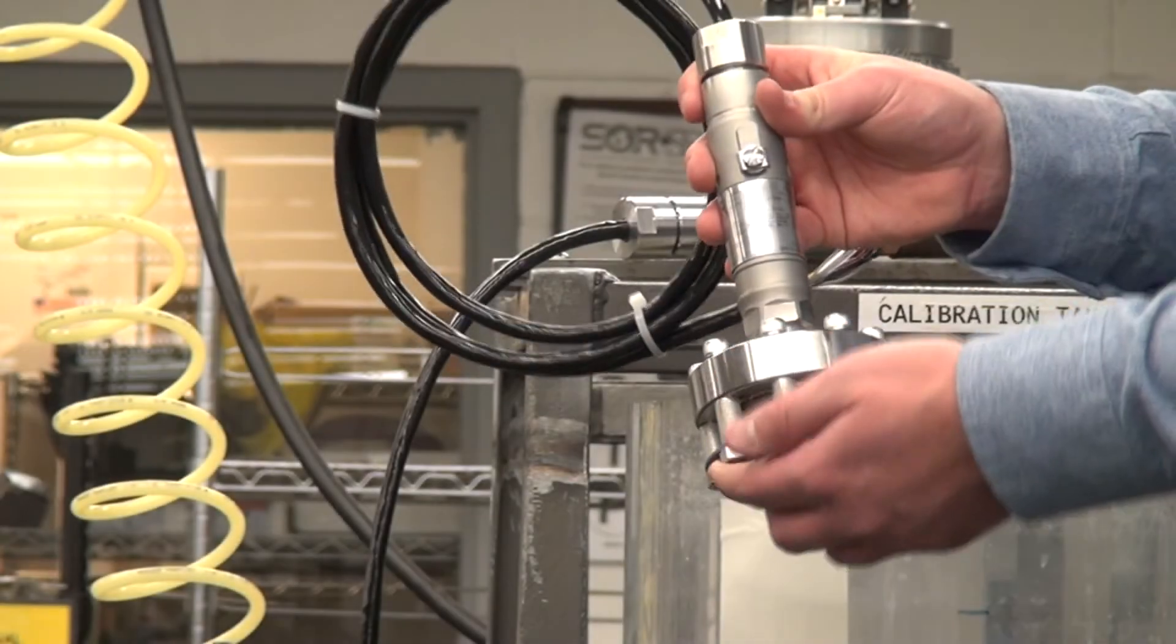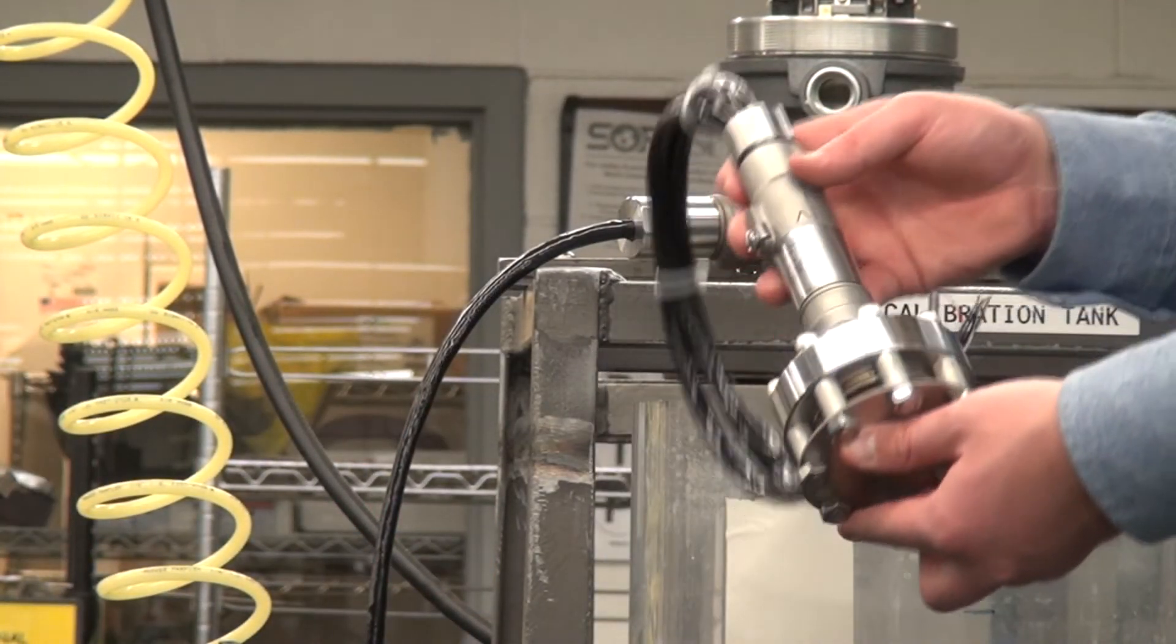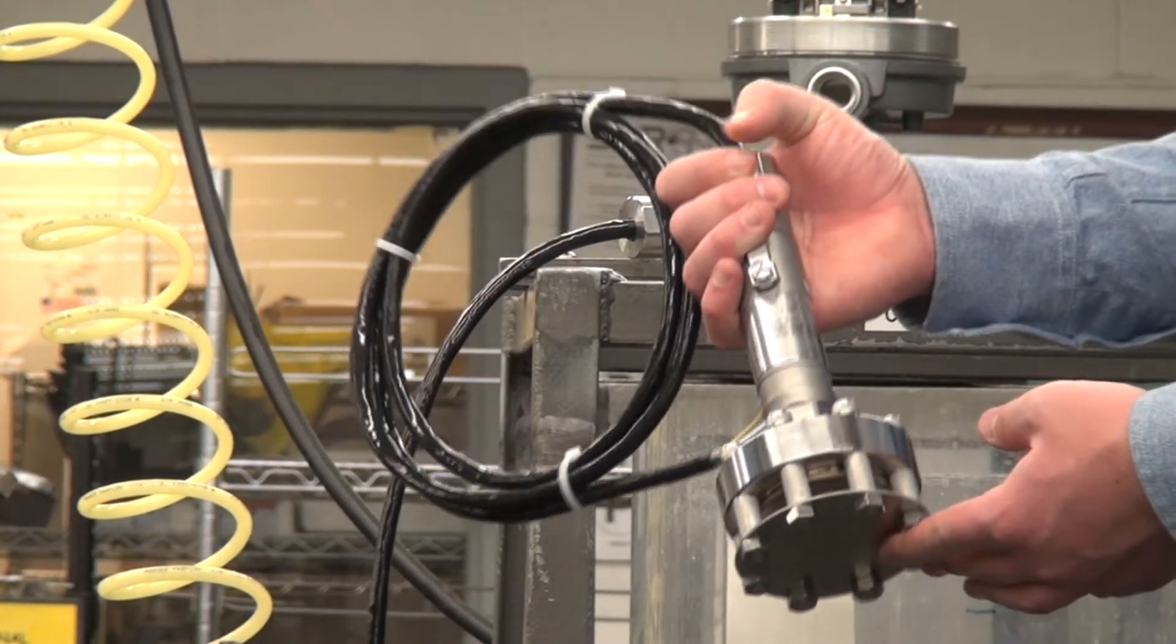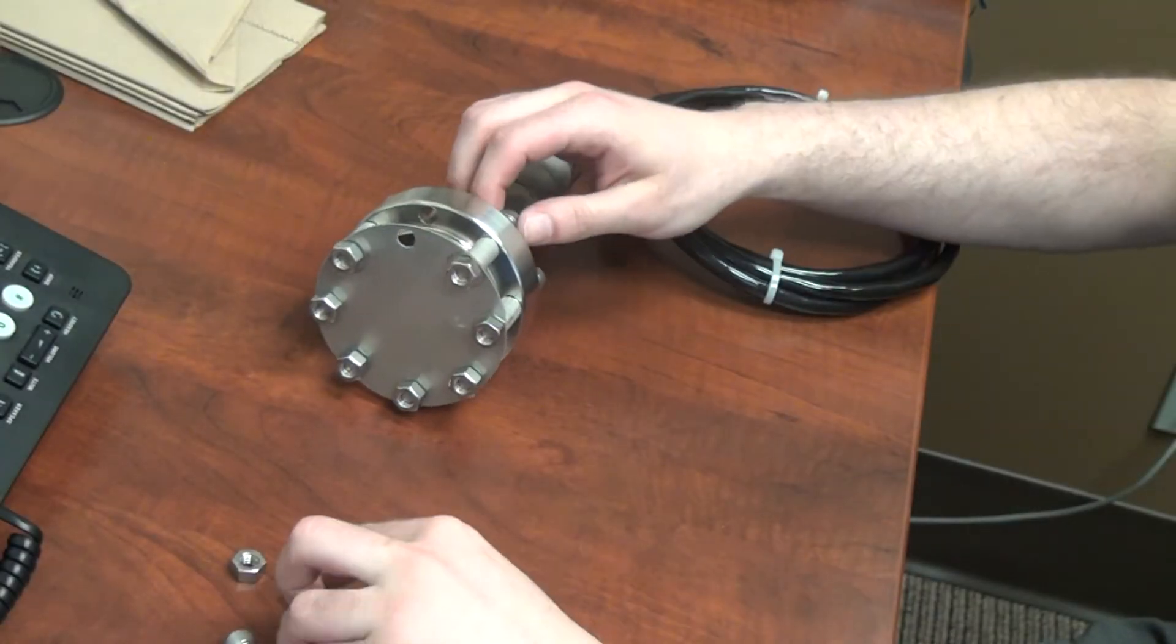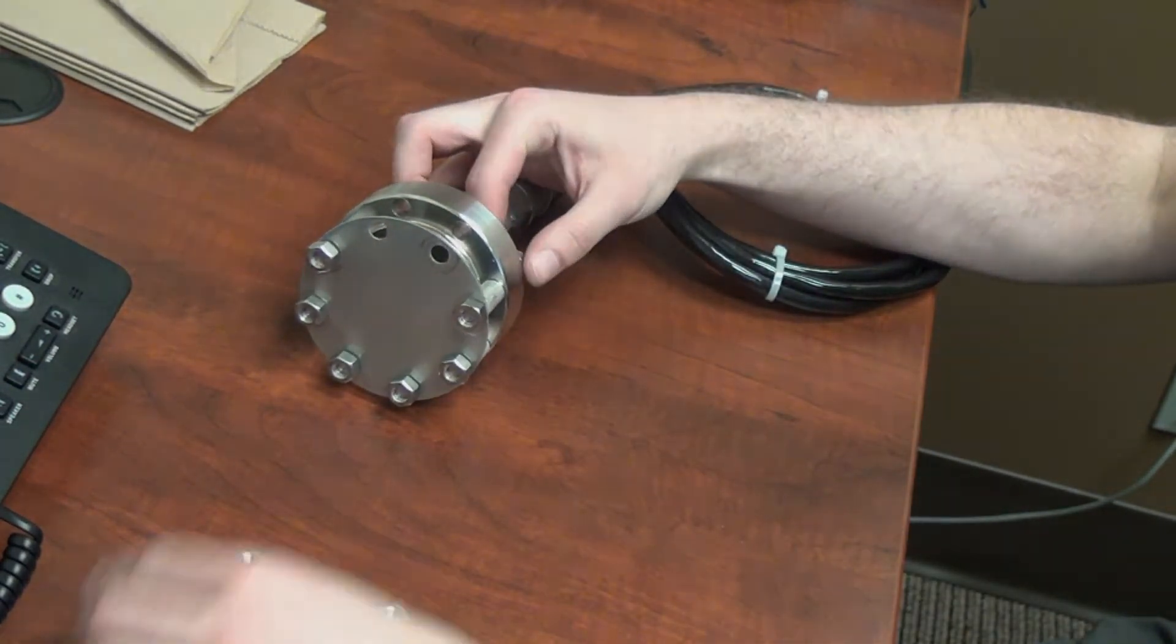It also incorporates the cage assembly to protect it from anything that could potentially damage the face of the sensor while it is in service. The cage assembly is easily removable via the nuts here so you can take it off and clean the face of the diaphragm seal.